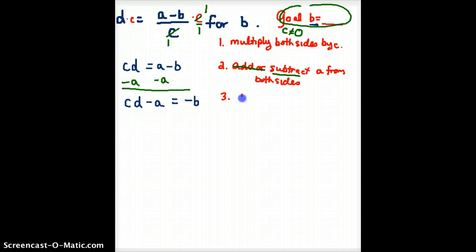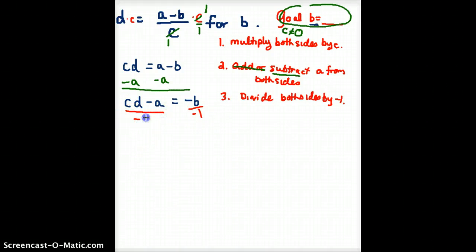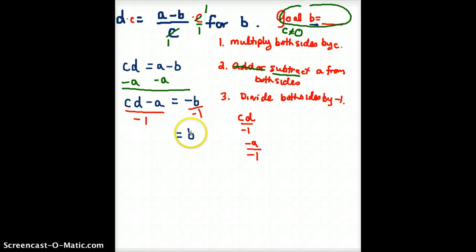So the third thing that we're going to need to do is to divide both sides by minus 1. So if I divide by minus 1 over here, and I divide by minus 1 over here, let's see what we get. So we've got CD over minus 1, and then we've got minus A over minus 1. Perhaps you can see that on the right, minus B over minus 1 is simply plus B, because a negative divided by a negative is a positive.